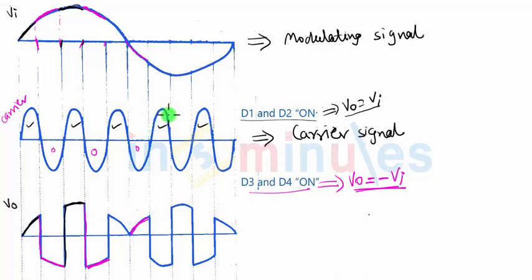Similarly, when there is a positive cycle of the carrier signal, VI is taking more negative values, and because in the positive cycle VO should be equal to VI, you can see VO also takes the same negative values.